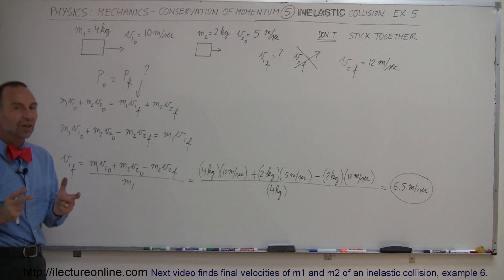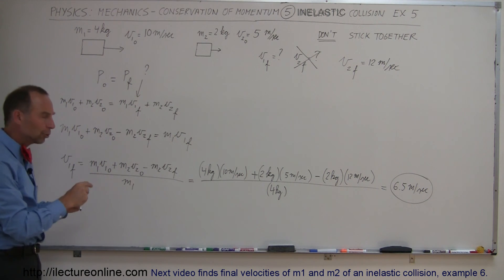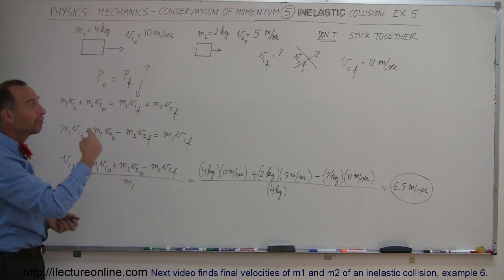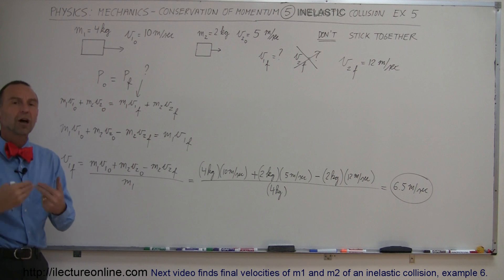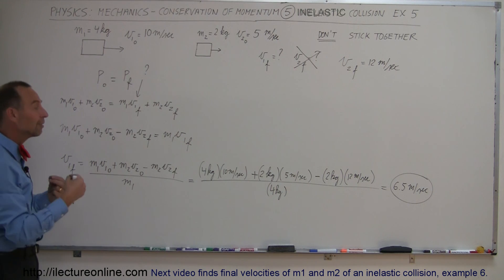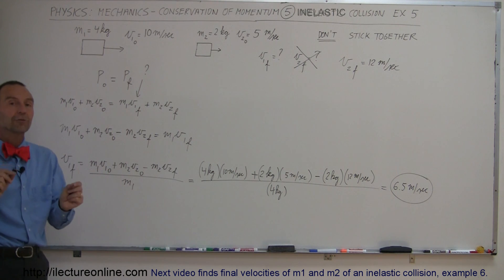You can't solve for both at the same time unless some other piece of information is given. So in the next video we'll do the same problem, but instead of giving you one of the final velocities, we're going to give you some information about how much of the energy is lost in the collision, which also will give you additional information. Then you can solve for both V finals. If you want to see how that's done, come and look at the next video.